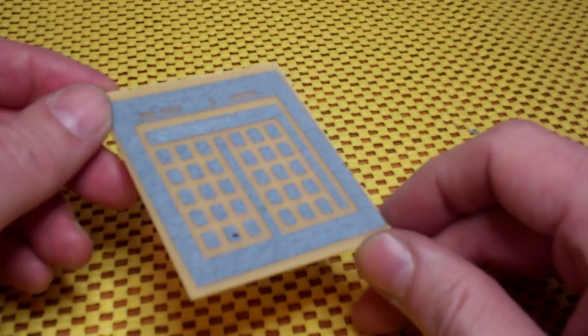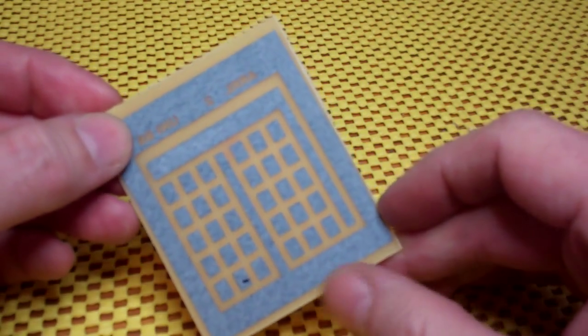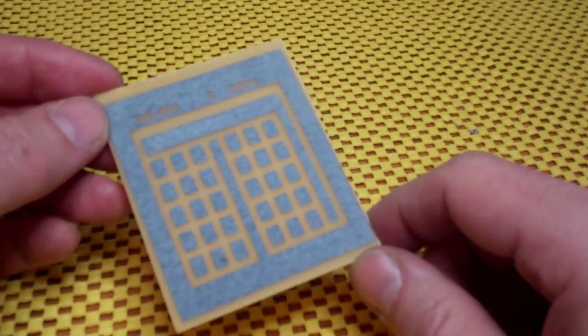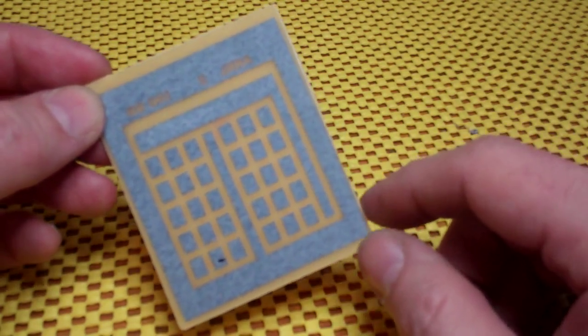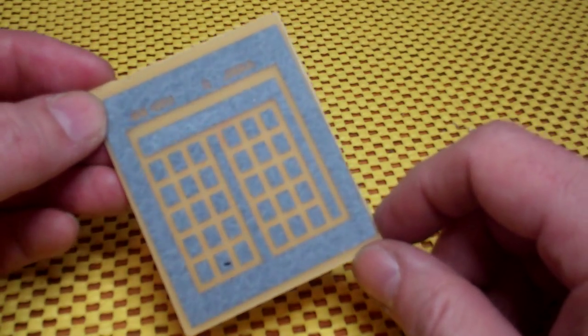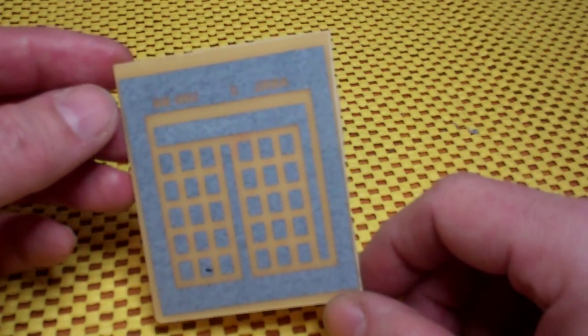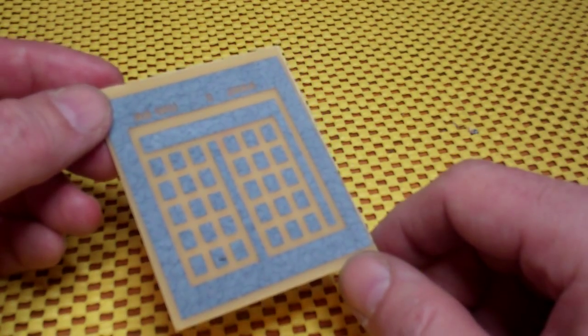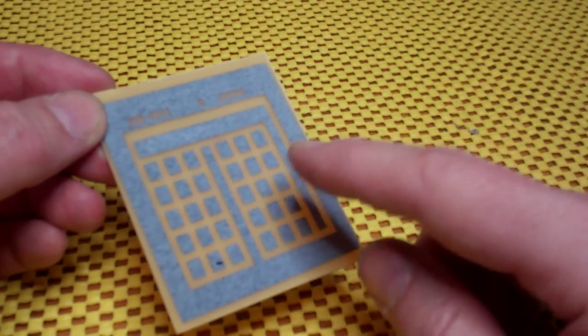A home DIY method for taking copper clad boards and etching patterns onto them. This is a quick video because I've already done this, and I'm going to show you the results you can achieve at home and describe some of the steps in the process.